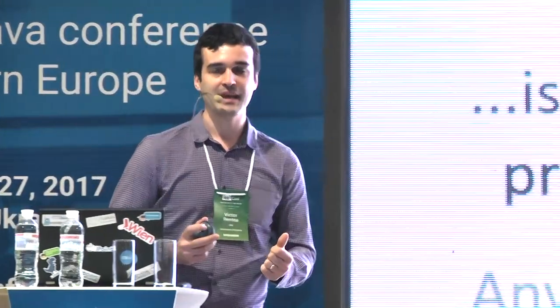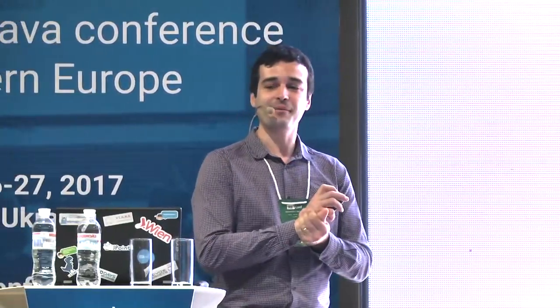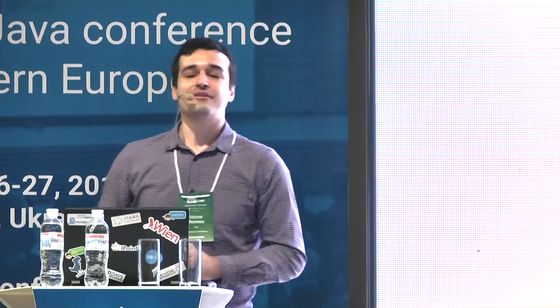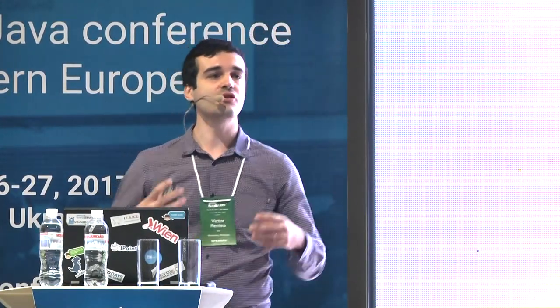Clean code is when each method you read turns out to be pretty much what you already expected from the context. The code should not surprise you. Anyone can write code that a computer can understand, but very few programmers are able to write code that humans can understand. That's the principle — we no longer just code, we should communicate. The international unit of measure for clean code is how often the code annoys you when you review it. The code should not shock you, should not make you wonder — it should be pretty much what you already expected.